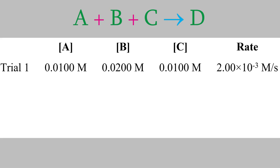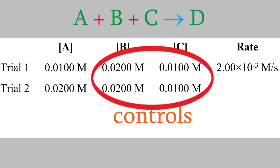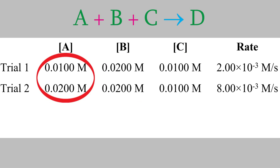So let's just change the concentration of reactant A — we'll double it to 0.0200 molar. B and C will stay the same as in trial 1. When we perform experiments where we change some variables and keep others constant, the ones we don't change are called controls. So in this case, the concentrations of B and C are control variables. Suppose we perform this second trial and find out that the rate this time is 8.00 times 10 to the minus 3 molars per second. Notice what happened: we doubled the concentration of A, and as a result, the rate went up by a factor of 4.